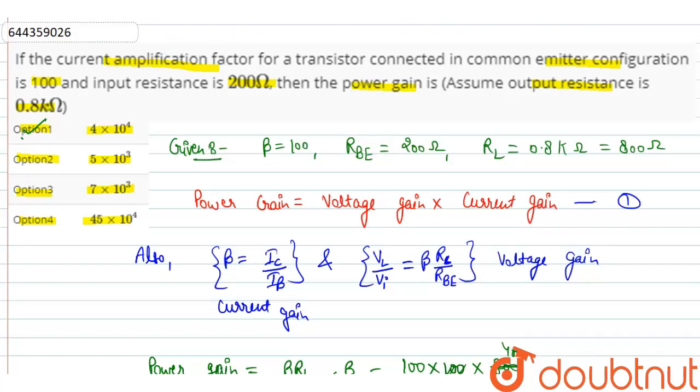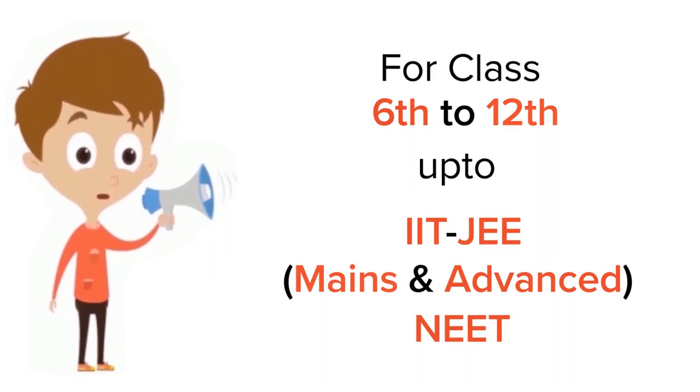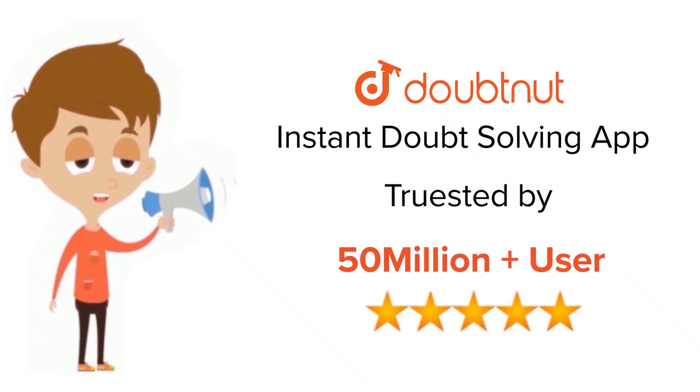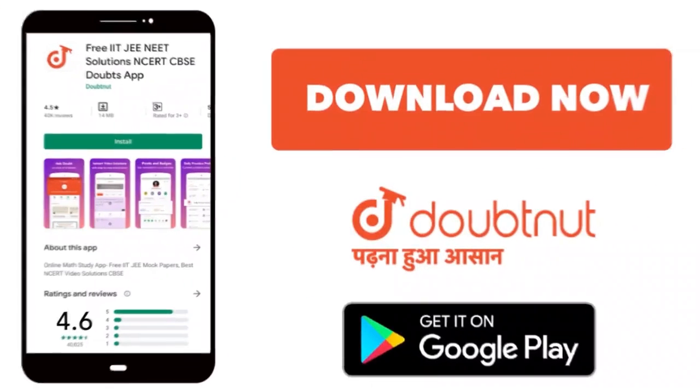So option number 1 is the correct answer. For class 6 to 12, IIT-JEE and NEET level, trusted by more than 5 crore students. Download Doubtnet app today.